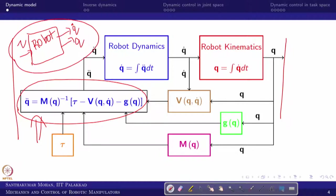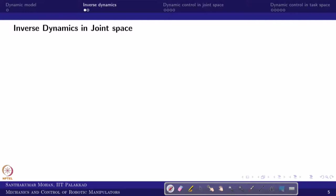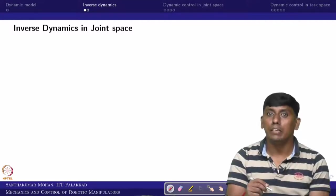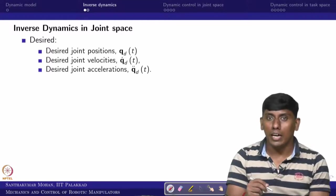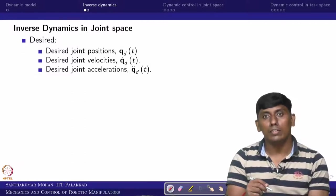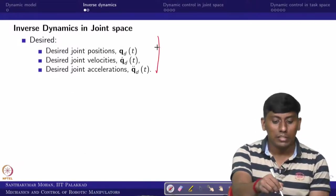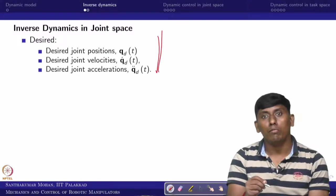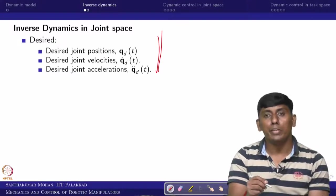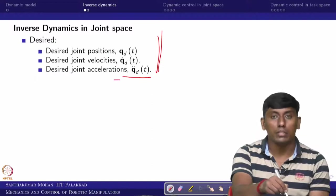This is the simple robot dynamic model we are going to use hereafter. Let us move to inverse dynamics. What would be given to us? The desired position, desired velocity, and desired acceleration would be given to us. In fact, we will use fifth-order or third-order polynomials, so we will know these.